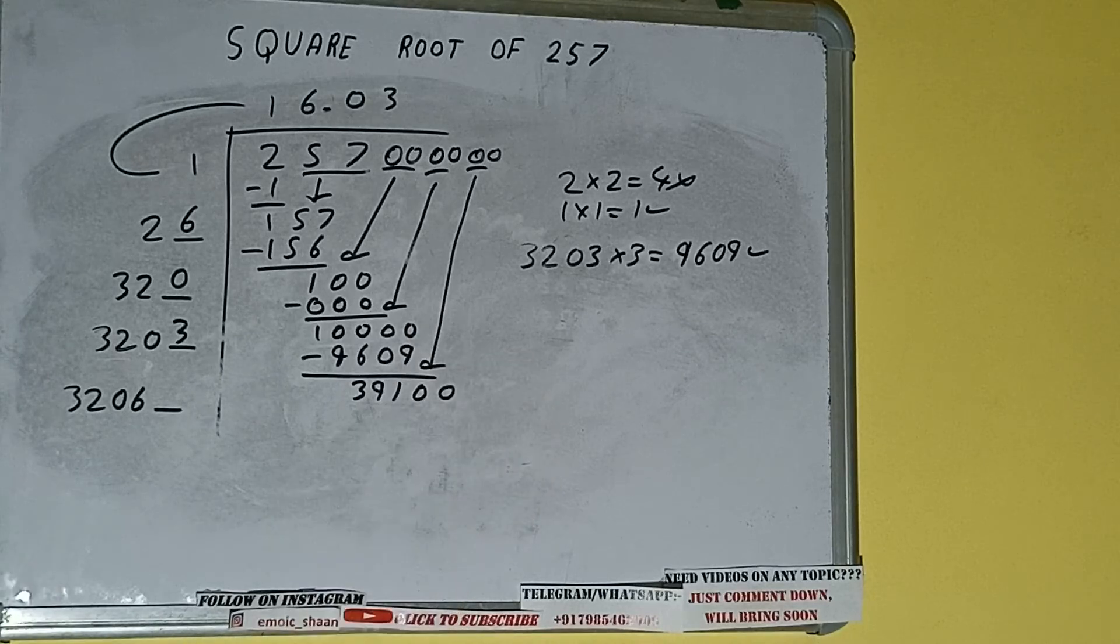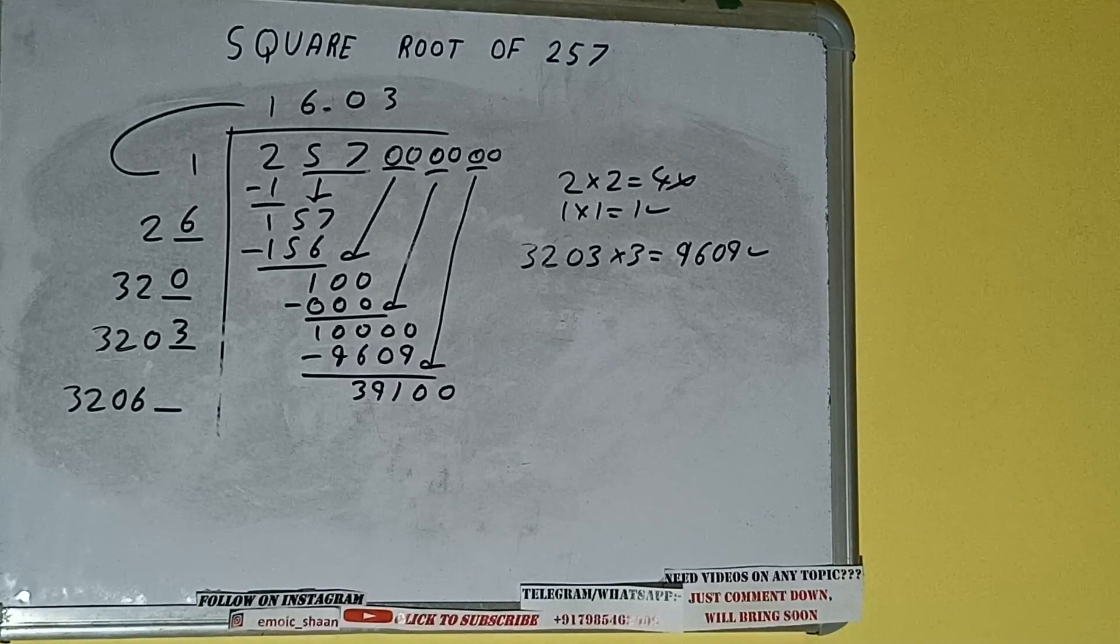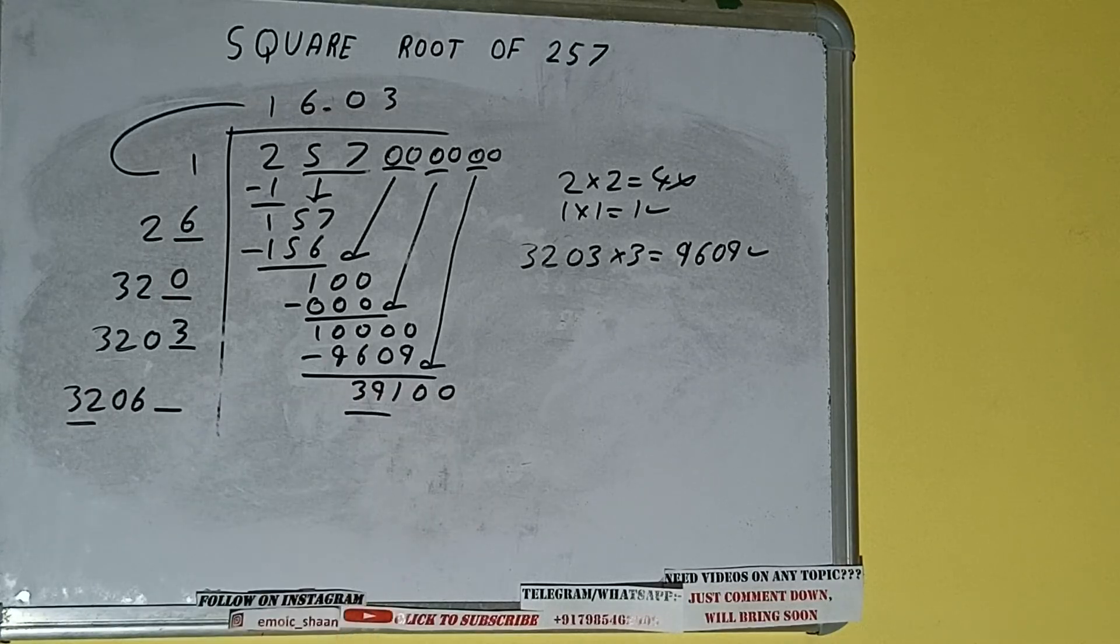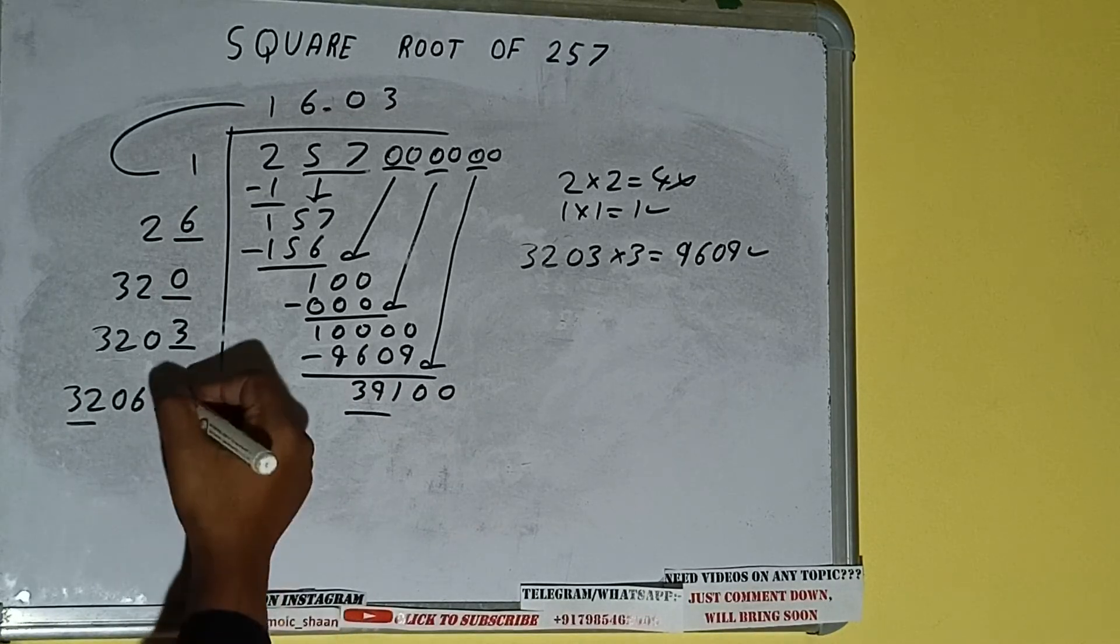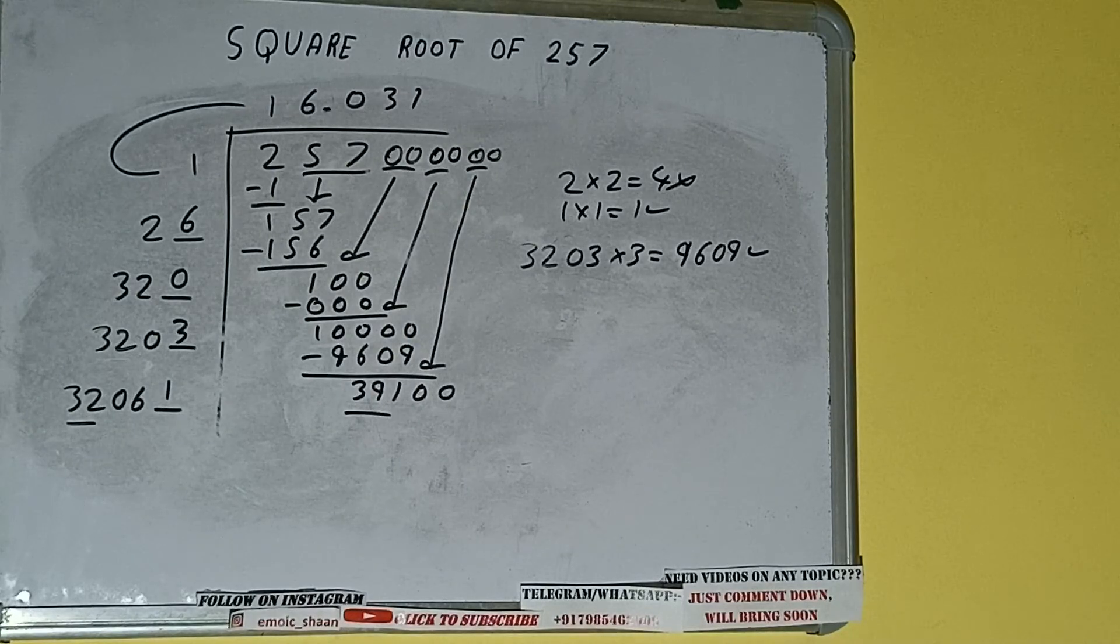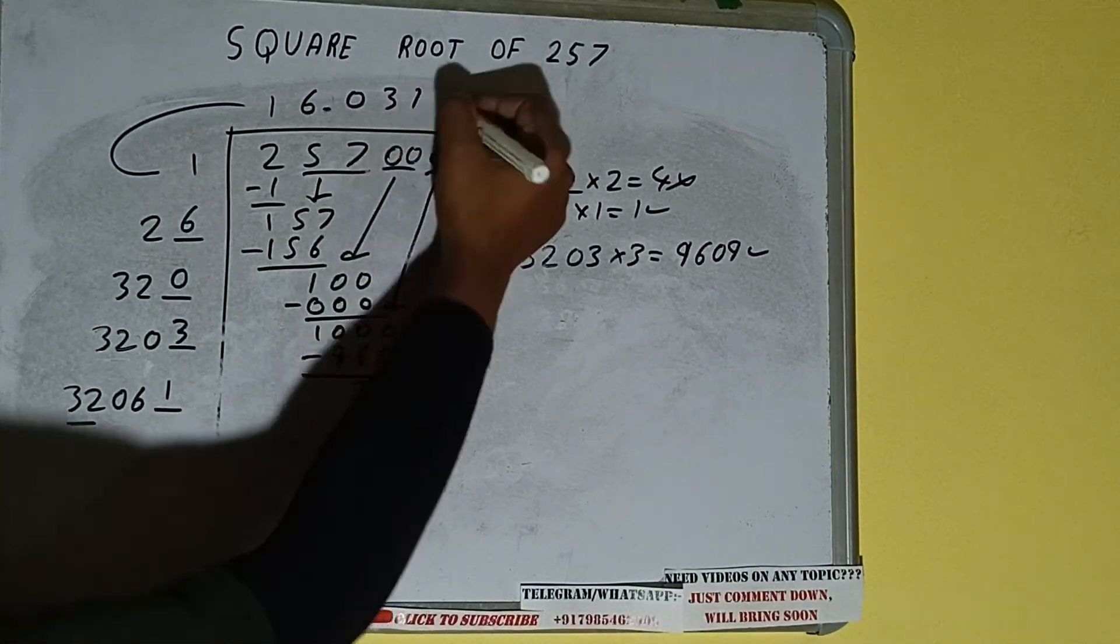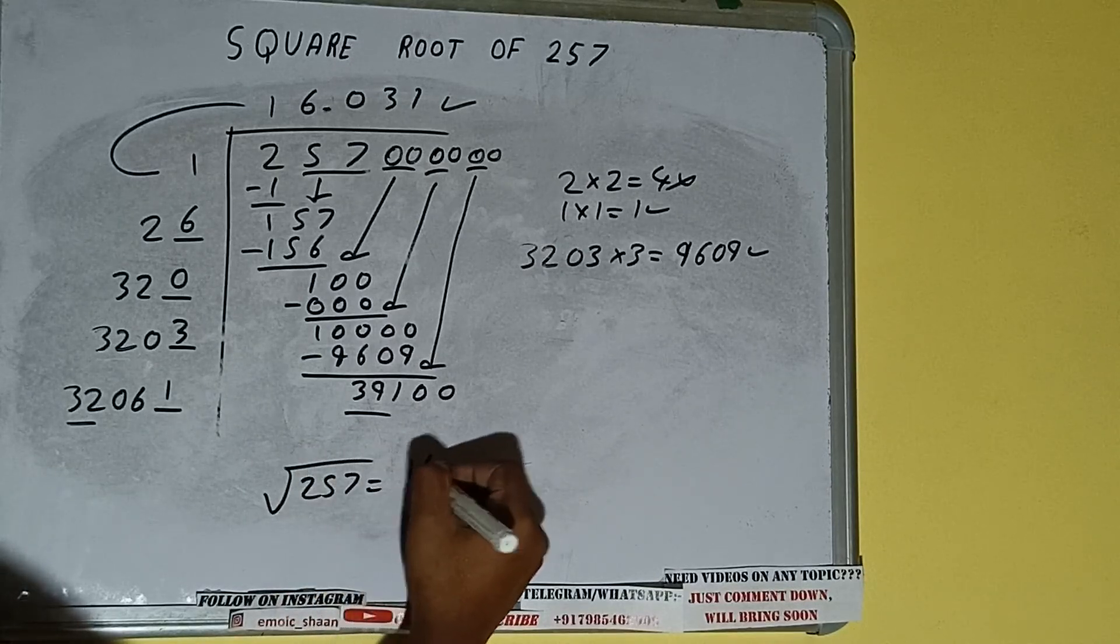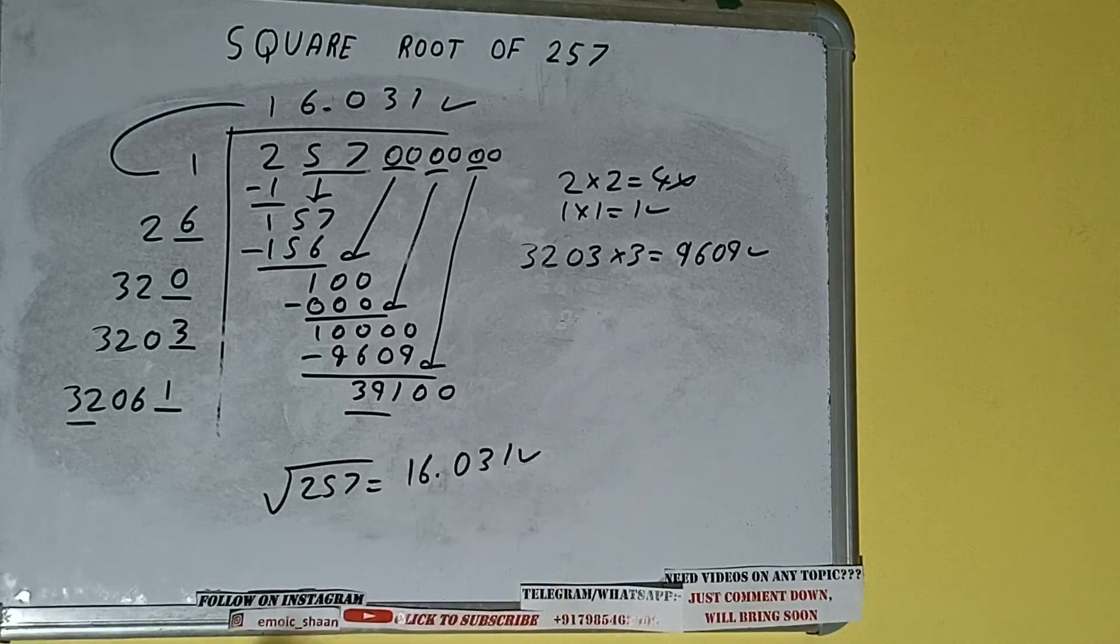So bring the next pair of zeros down and it will be 39,100. Now we can compare this 32 and 39, so clearly one time will work. So one here and one here, but we don't need to calculate because we got the answer correct up to three decimal places. So square root of 257 will be 16.031, that will be the answer.